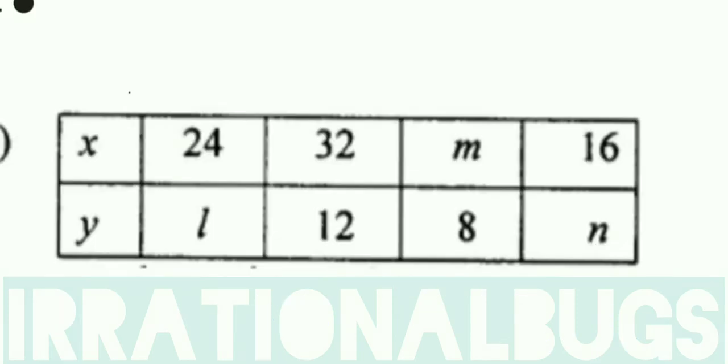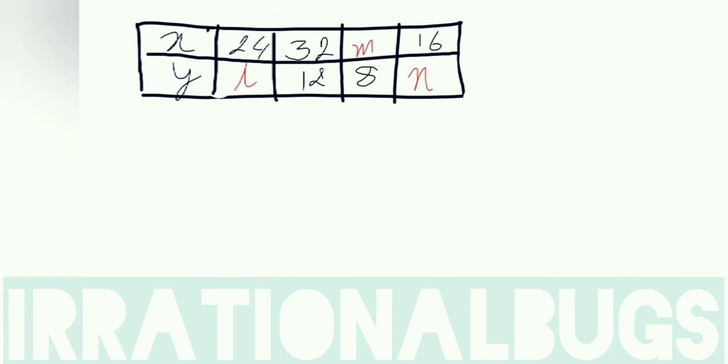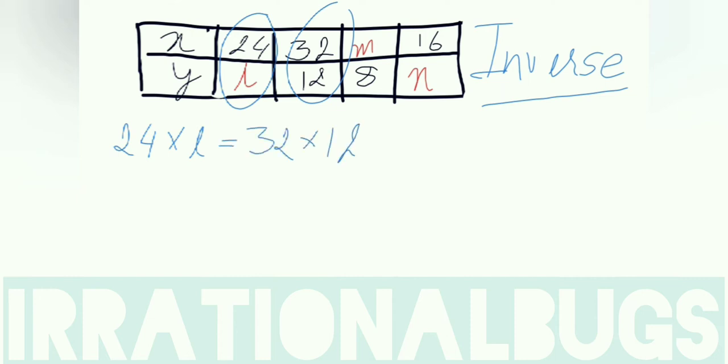Question 2, now we are doing the second part. Again inversely proportion, this is already given. Here we need to find the value of l, m, and n. l is equal to 32 into 12 upon 24. 12 one times 12, 12 two times 24. So l is equal to 16 is our answer.